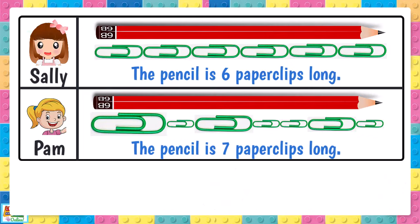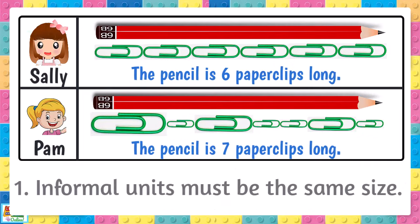Pam would have measured correctly if she followed the first rule, which is that all informal units must be the same size. If Pam used paperclips that were all the same size, she would have measured the pencil correctly.